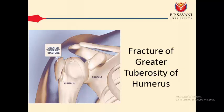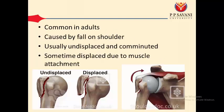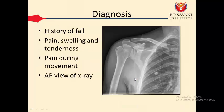The second topic for today's video is fracture of the greater tuberosity of the humerus. It is also common in adults, and the main reason is a fall on the shoulder. Normally it is undisplaced, but it can become displaced. The main reason for displacement is the supraspinatus muscle attachment to the greater tuberosity — contraction of the supraspinatus can displace the fragment. An AP view of the shoulder joint will confirm the diagnosis.